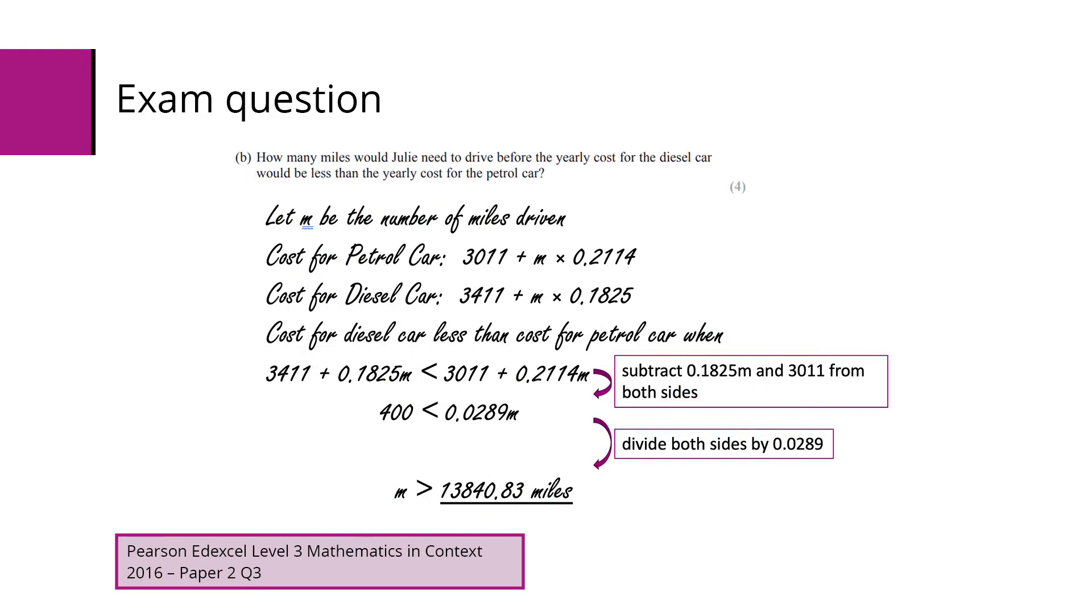So for part B, we've got to work out the number of miles so that the cost of the diesel car is less than the cost of the petrol car. So here we can form an equation or inequality. Let M be the number of miles driven. Using the same values from last time, we've got 3,011 plus M times 0.2114 for petrol, and for diesel we've got 3,411 plus M times 0.1825.